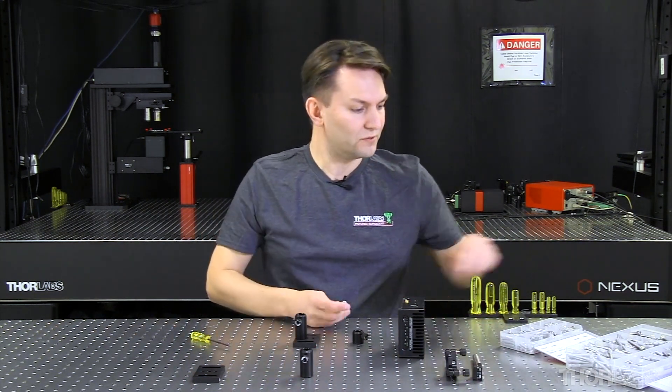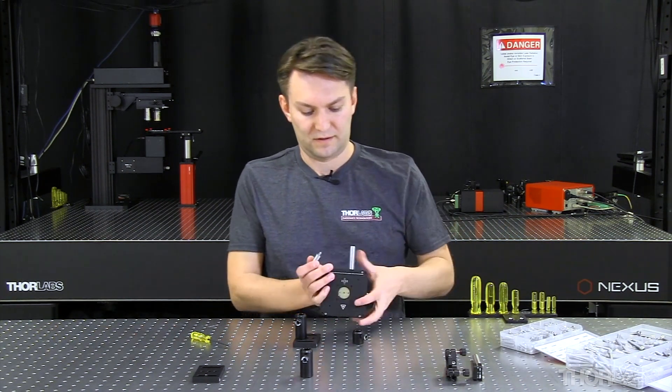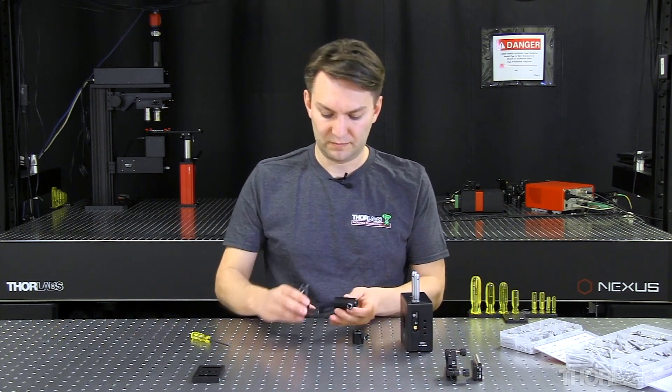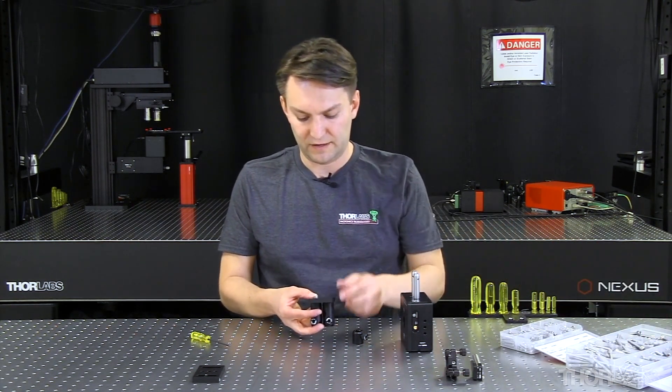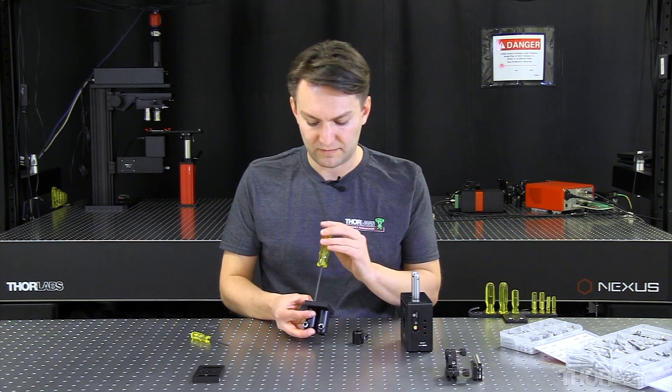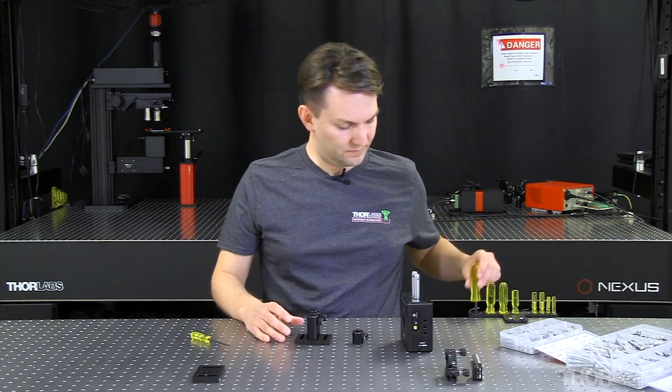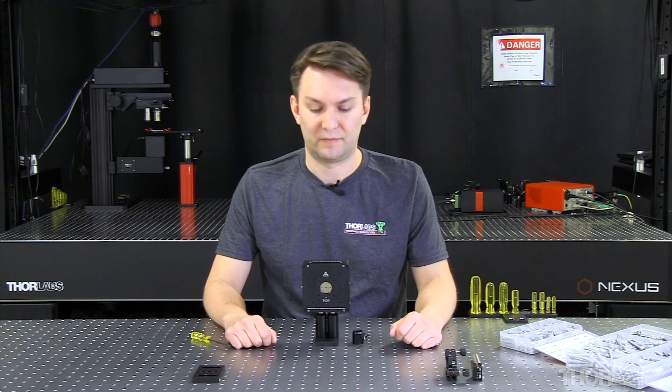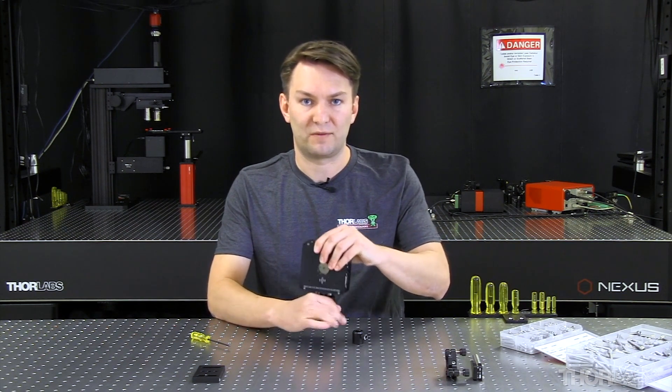So in this case, I'll take my other post, and I'll thread that onto my laser mount. I'll take my second post holder. And here you can see it becomes important to ensure my knob is in a specific location so that I can access both of them. And now I can take my laser mount, put it inside of my post holders, and I'm going to have a very stable setup. I'm not going to be able to rotate this laser mount with respect to my base.